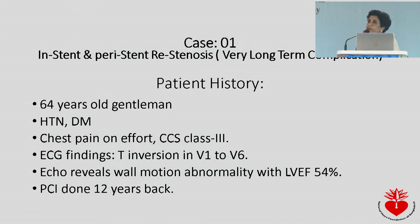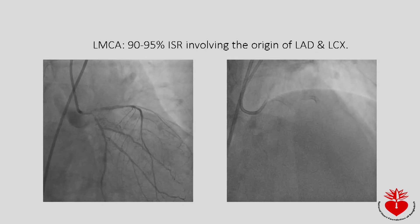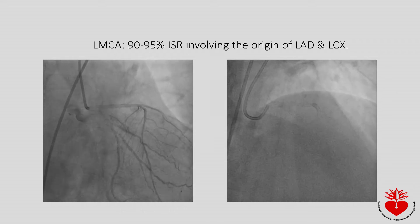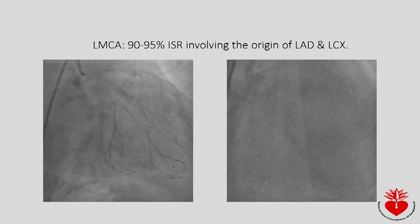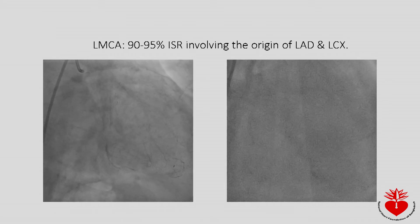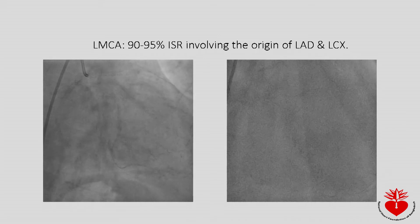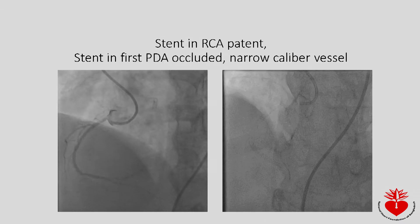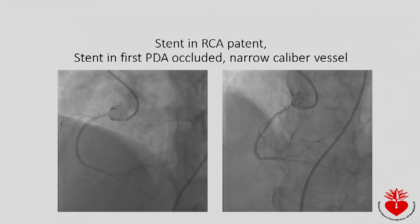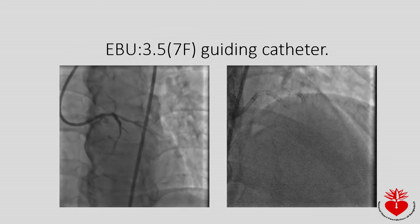The first case is a 64-year-old gentleman, hypertensive and diabetic, with severe chest pain for a long time. His echo showed ejection fraction of 54%. He had a history of PCI with drug-eluting stents 12 years prior. His angiogram showed a stent placed from left main to LAD 12 years back, with now 90–95% in-stent restenosis involving that stent as well as the origin of the LAD and the origin of the LCX. This was a first-generation drug-eluting stent. The RCA stent was patent but the stent in the PDA had occluded.